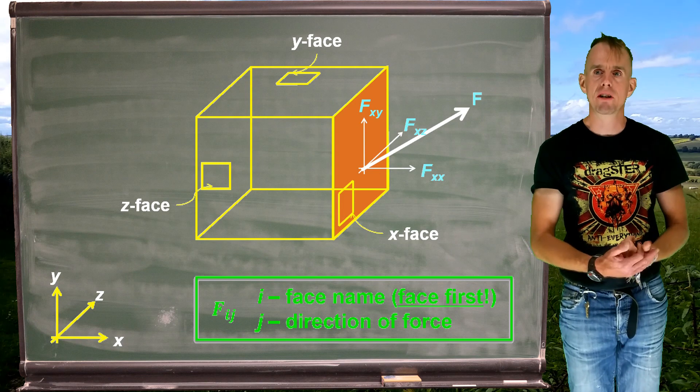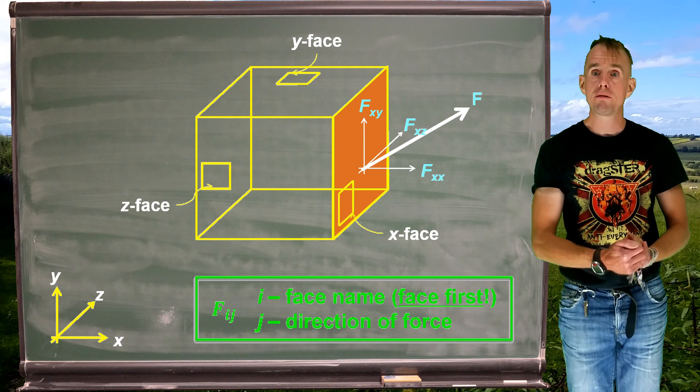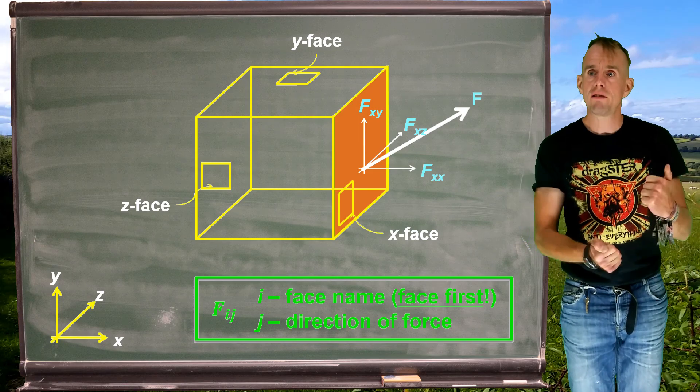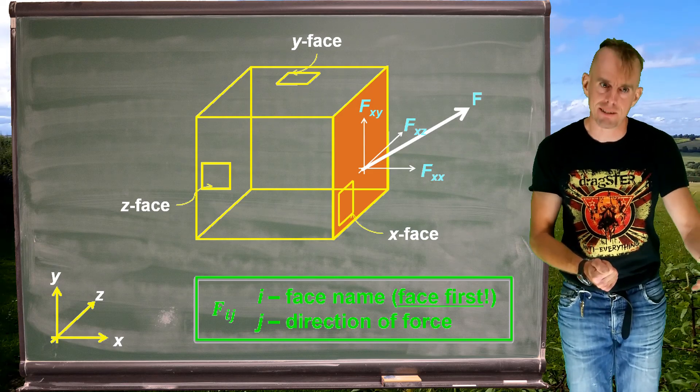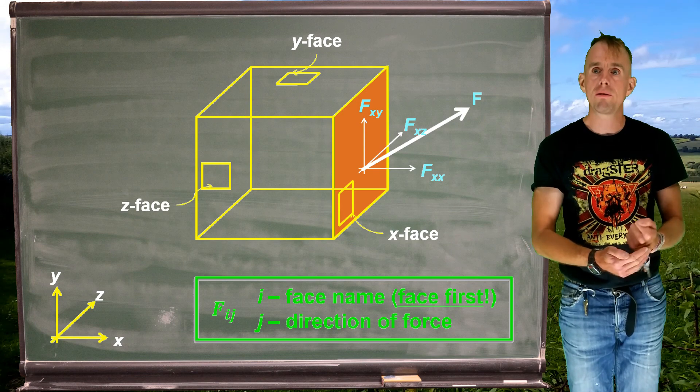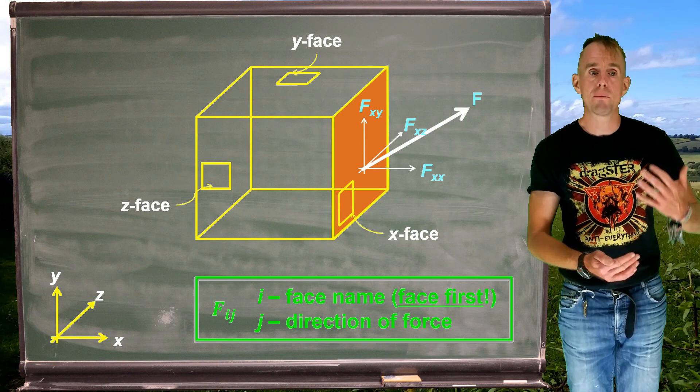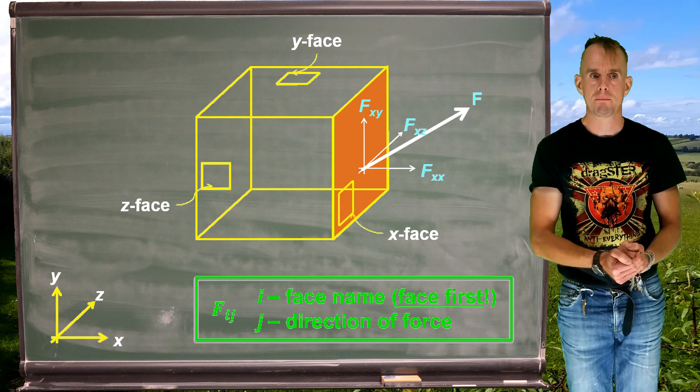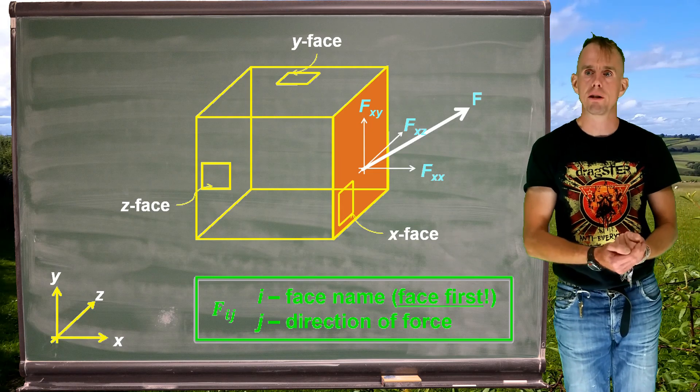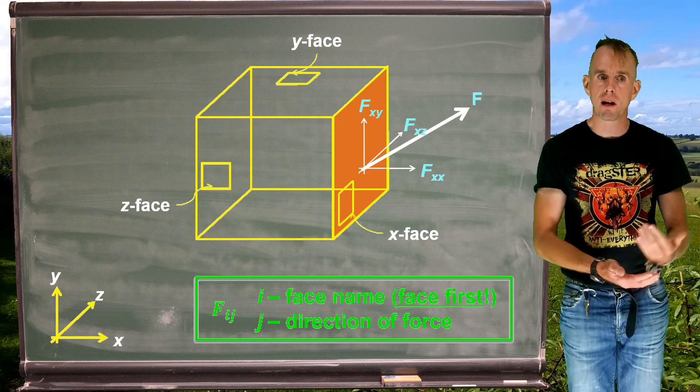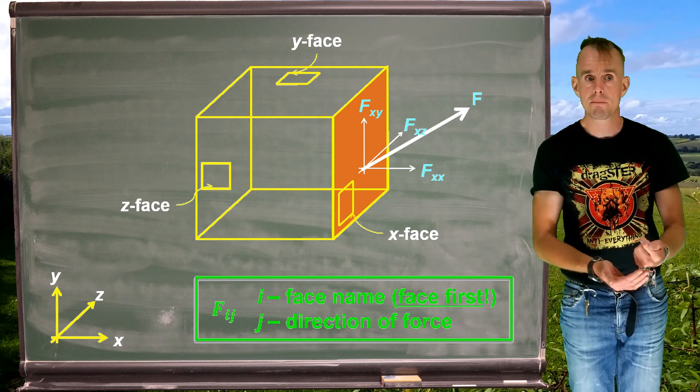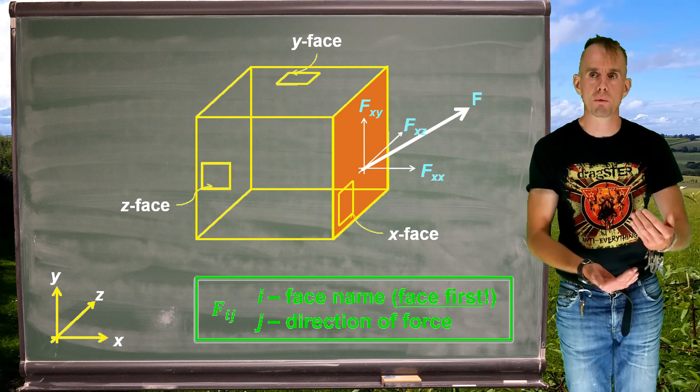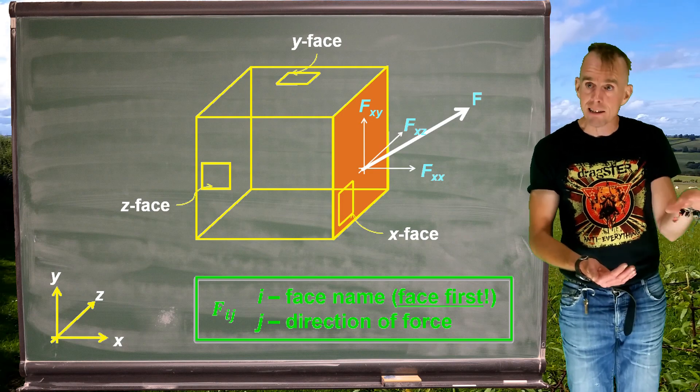So when we record this information, we need to record two pieces of information. We need to record the face upon which the force is acting, in this case the x face, but we also need to record the way in which the force is acting. And so we have two subscripts. And in the green box there on the blackboard, you can see that our first subscript is i, which is the face name, and the second subscript is j, which is the direction of the force upon which it acts on that face.